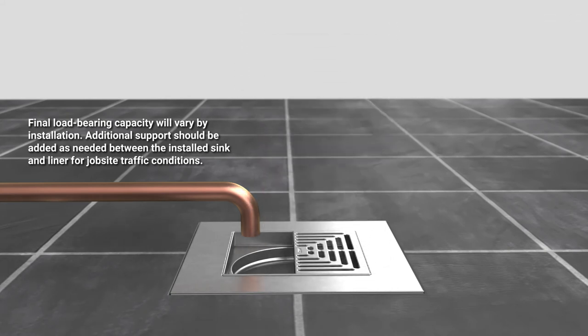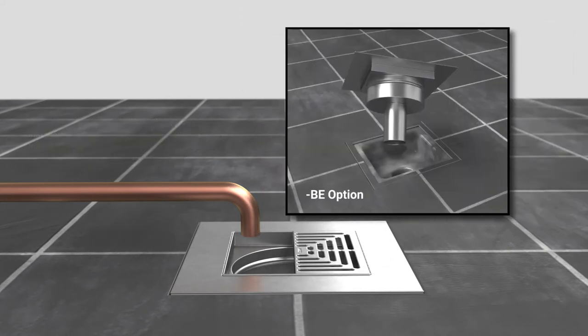When using the optional bent edge flange, cut the groove in floor and fill with sealant or adhesive just before the liner insertion to accept the bent edge.